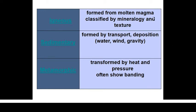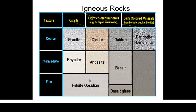Igneous rocks could be converted to metamorphic rock by heat and pressure, and sedimentary rocks could similarly be converted to metamorphic rock. Examples of igneous rock textures include coarse, intermediate, and fine. Light-colored minerals include quartz, feldspar, and muscovite. Dark-colored minerals include hornblende, pyroxene, and biotite. Examples of coarse igneous rocks include granite; intermediate includes rhyolite; fine igneous rocks include felsite and obsidian. Obsidian rocks are examples of rocks that can float in water.